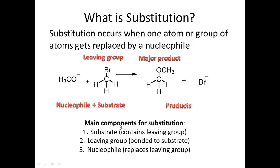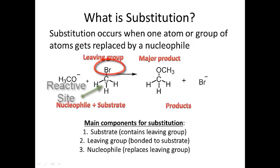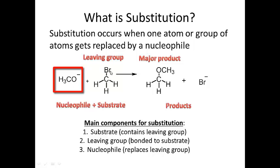The main components for a substitution reaction are: number one, the substrate — that's the reactant or reagent that contains the leaving group. The leaving group itself is bonded to the substrate, and the carbon that the leaving group is bonded to is your reactive site. Then you have your nucleophile, which is going to replace the leaving group.